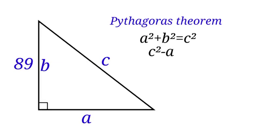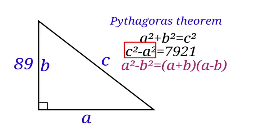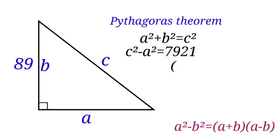Using this identity, the left-hand side of the equation will be open bracket C plus A, close bracket, open bracket C minus A, close bracket equals to 7,921.